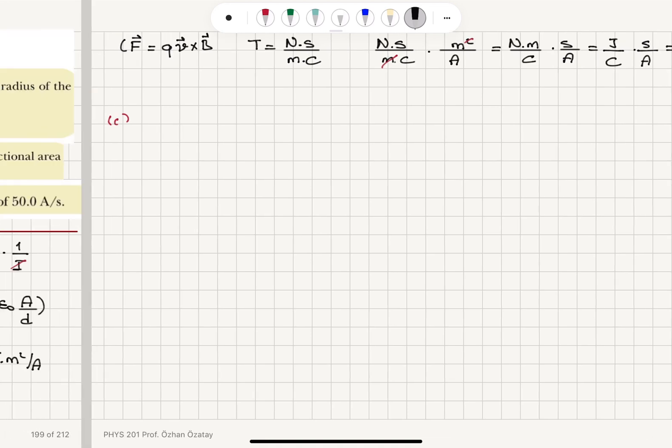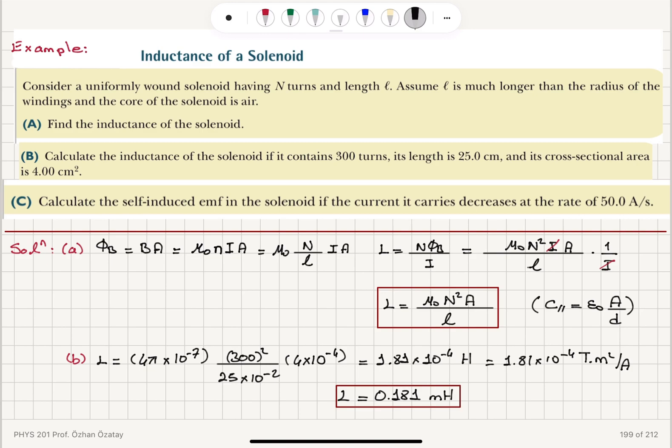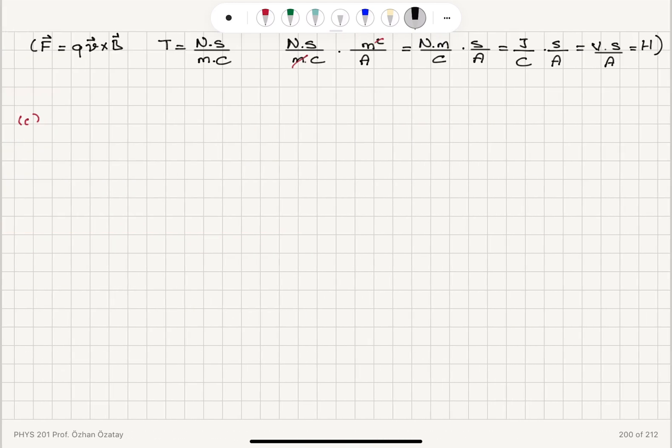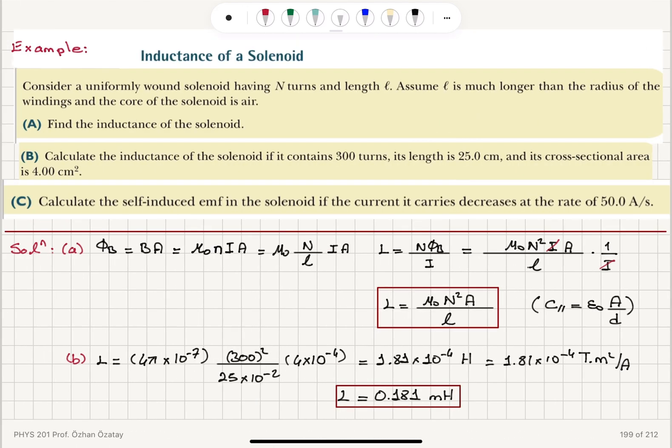So basically, Henry, which is defined by the equation epsilon L equals minus L di dt. That's volt seconds, volt seconds per ampere. That's the unit of Henry. And indeed, that's what we find here. Equivalently, it is Tesla meter squared per ampere.